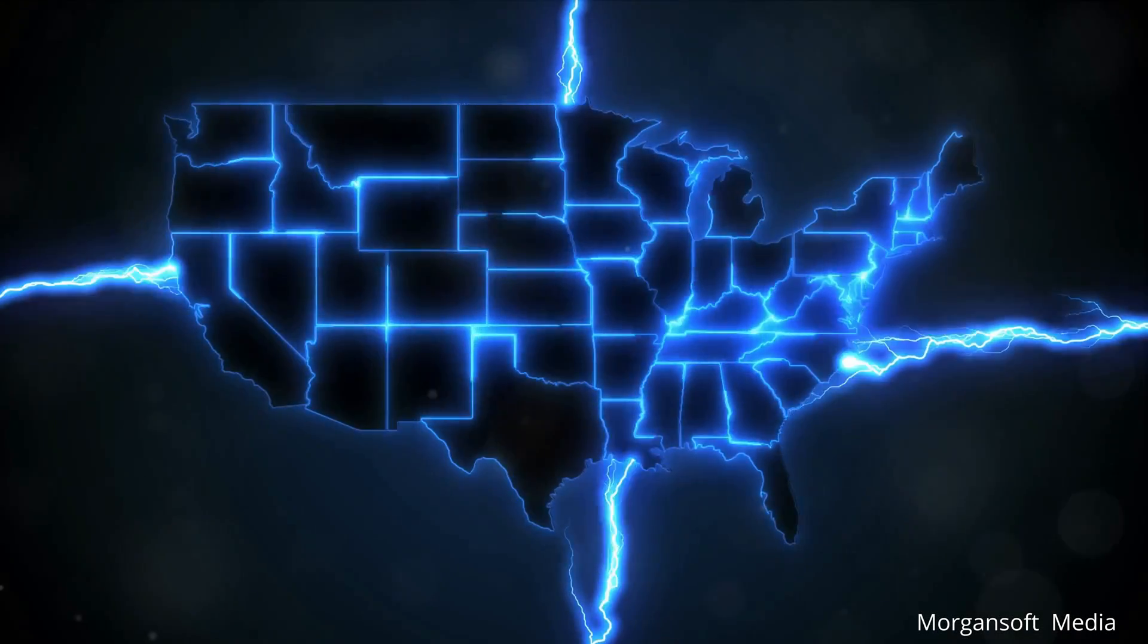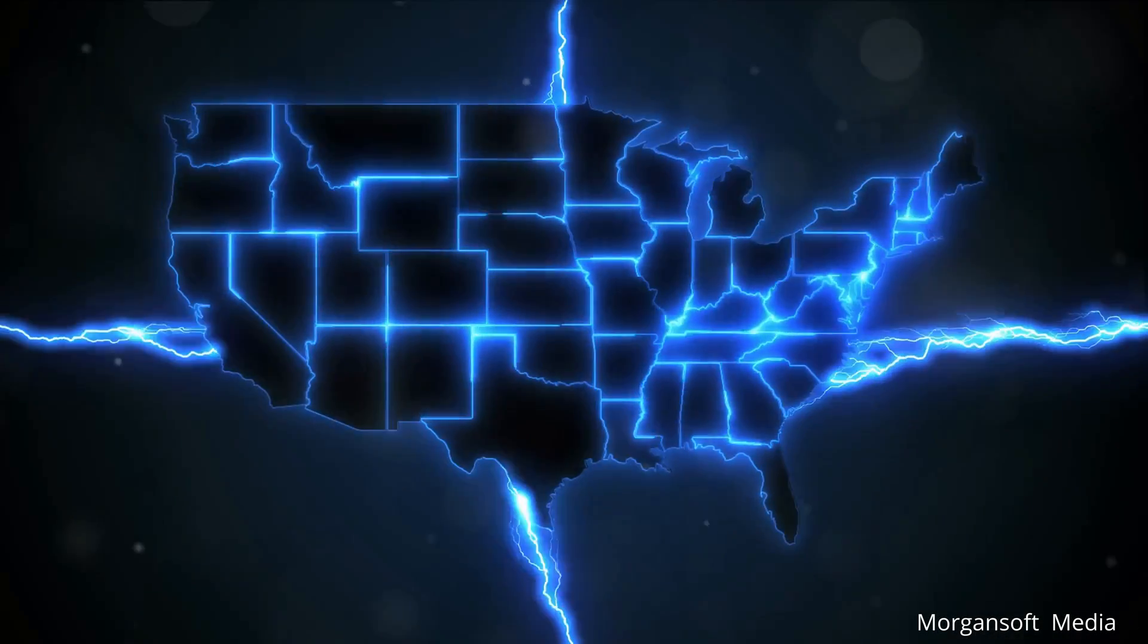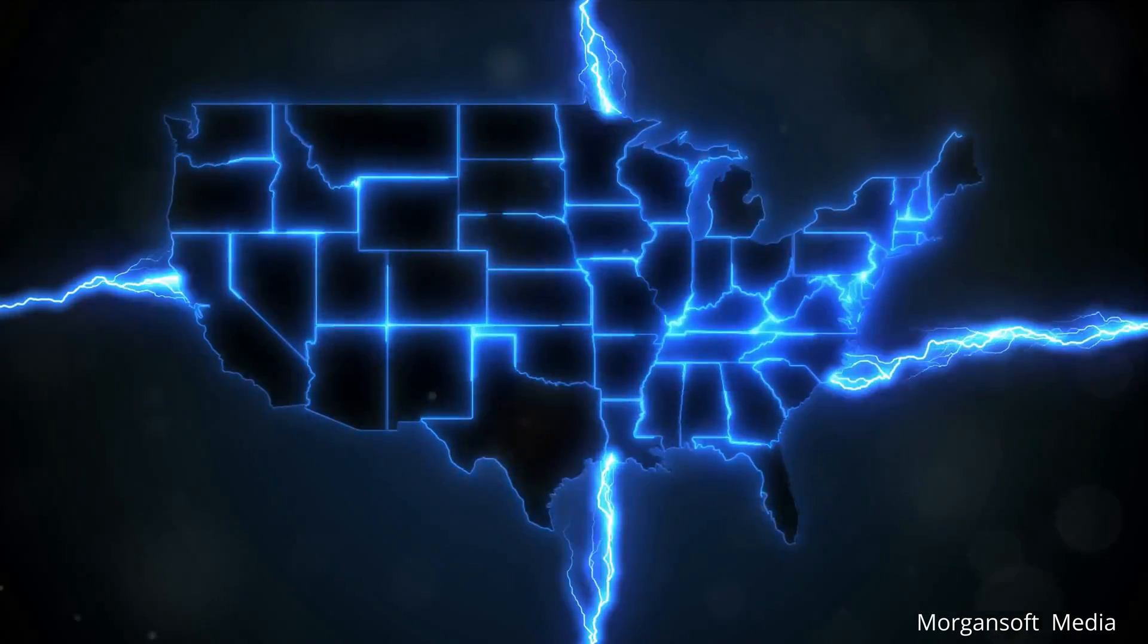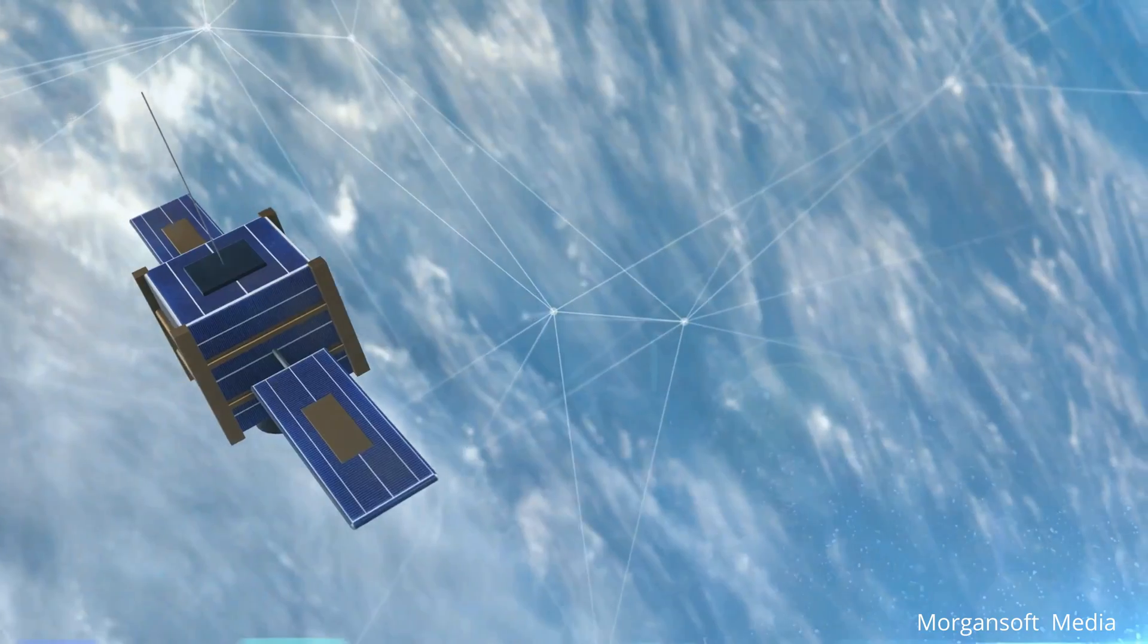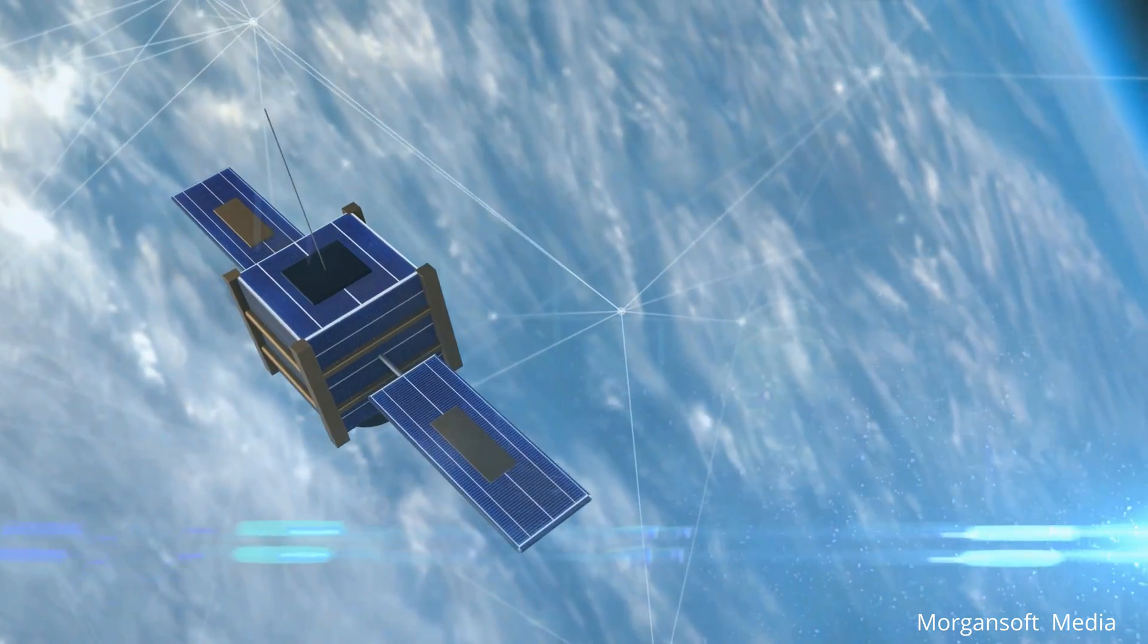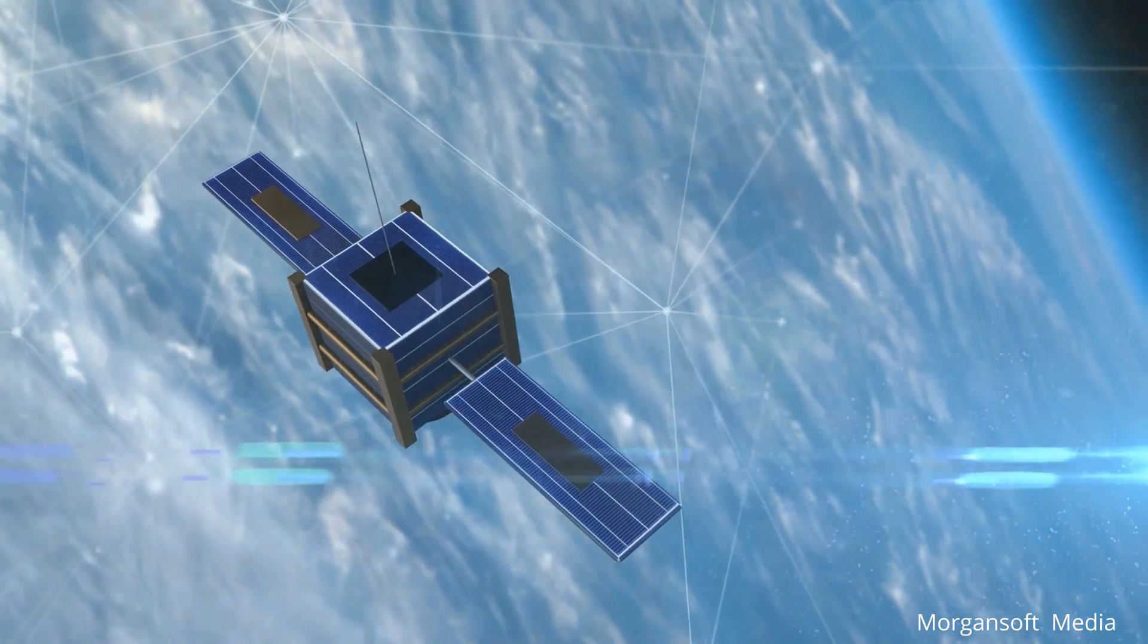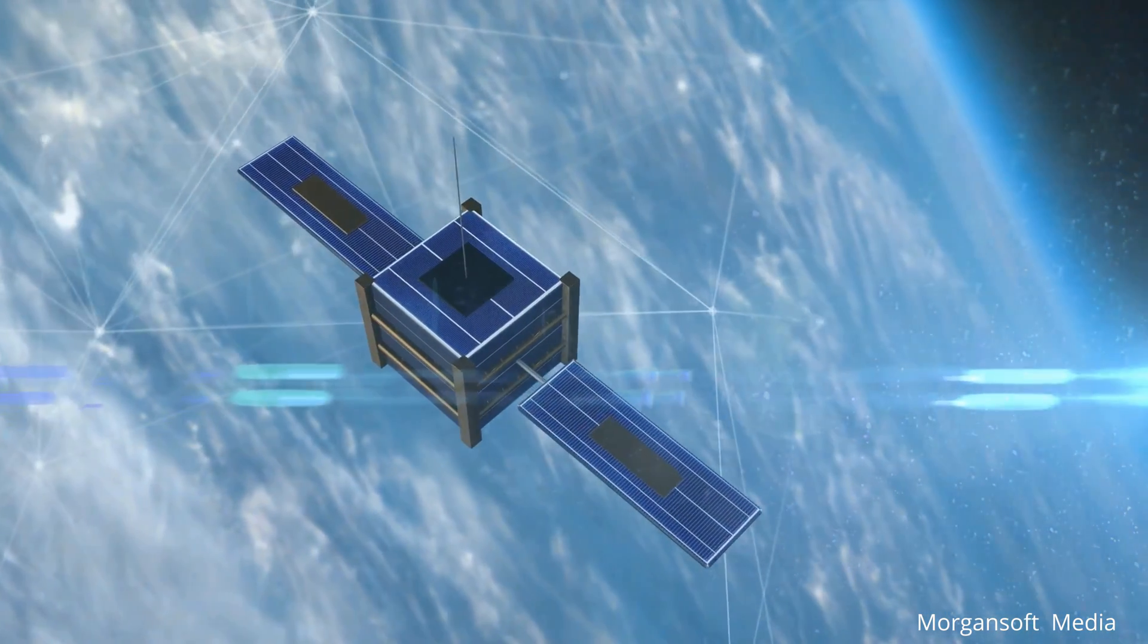Our modern infrastructure is particularly vulnerable. A solar storm like the Carrington event could induce electrical currents strong enough to fry power grids, leaving millions without electricity for weeks or even months. Communication systems would falter.